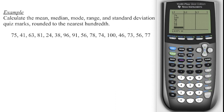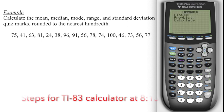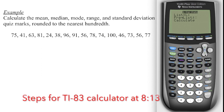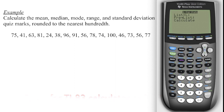Then go back to STAT, arrow over to CALCULATE, and choose number one — one-variable statistics. Set it to List 1. If there was a frequency list in List 2, you would go second function, then number two. In this case we don't have that, so go down to CALCULATE and press ENTER.